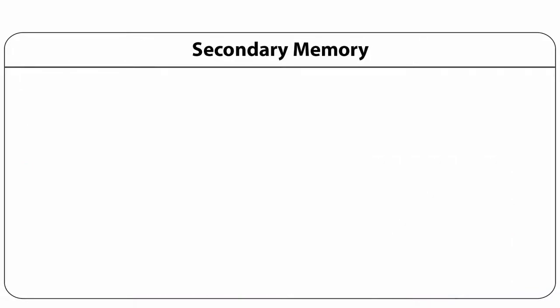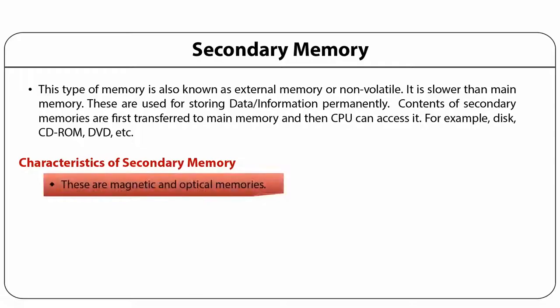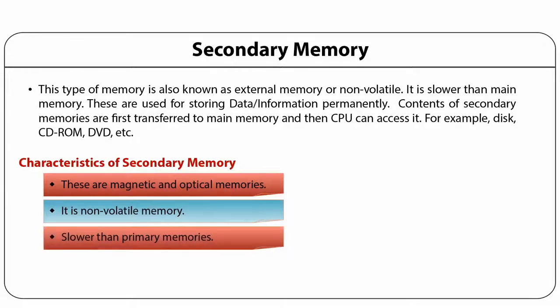Secondary memory is also known as external memory or non-volatile or permanent storage. It is slower than main memory but is used for storing data or information permanently. The contents of secondary memory are transferred to the main memory and the CPU can access them. Typical examples of secondary memory are disk, CD-ROM, DVD or hard disk. These are magnetic or optical memories and non-volatile.